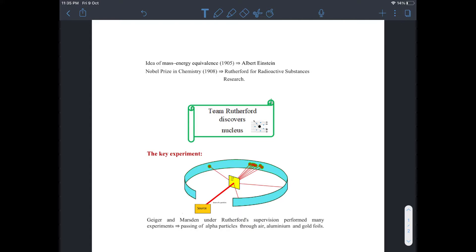Geiger and Marsden, under the supervision of Rutherford, performed many experiments which involved the passage of alpha particles through air, aluminum, and gold foils. One out of every 8000 alpha particles scattered through an angle which is greater than 90 degrees or in some cases was back scattered.